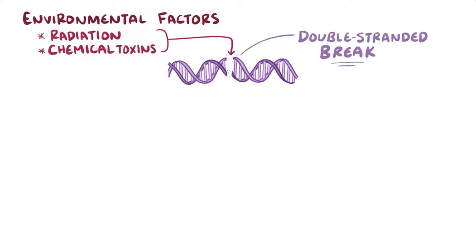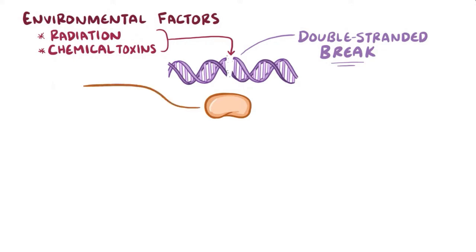where both strands of the DNA's double helix are severed, damaging the genetic information that was stored there. To help with this sort of repair, there's a protein called ATM.